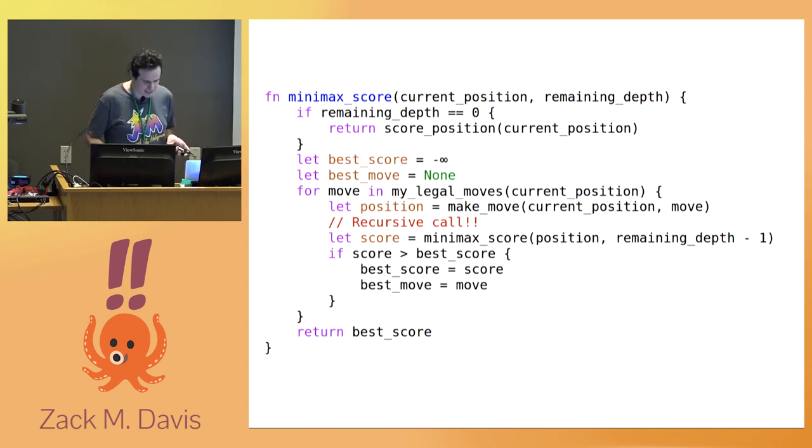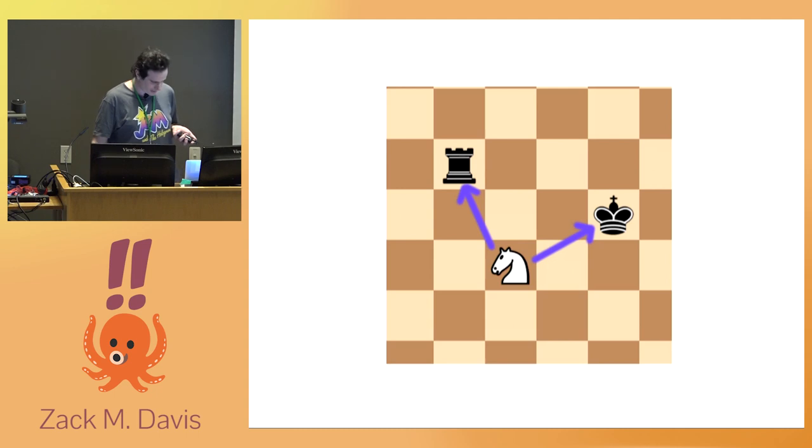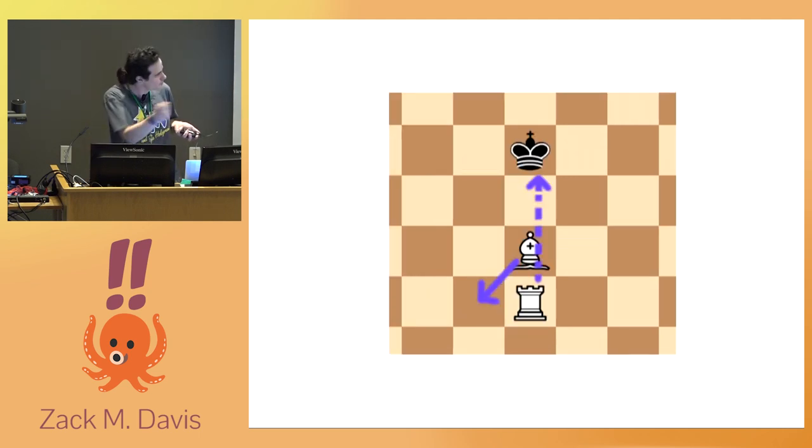So chess enthusiasts have names for specific board situations that have special significance because they happen to be advantageous for one of the players. For example, when a piece is in a position to attack more than one of the opposing pieces, we call that a fork. Or when one piece moves out of the way to reveal an attack by another that's hiding behind it, we call that a discovered attack.